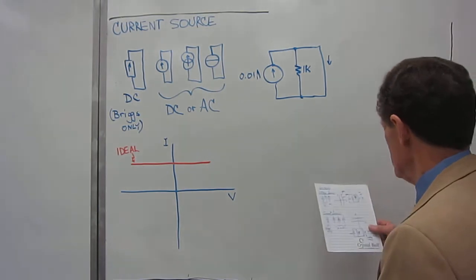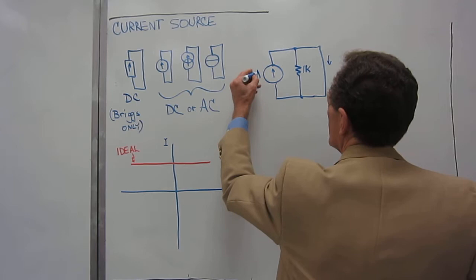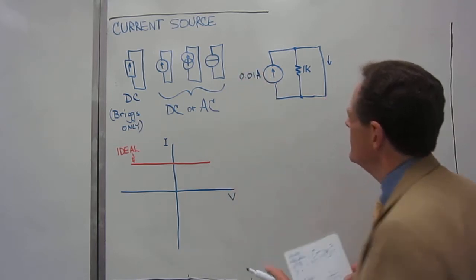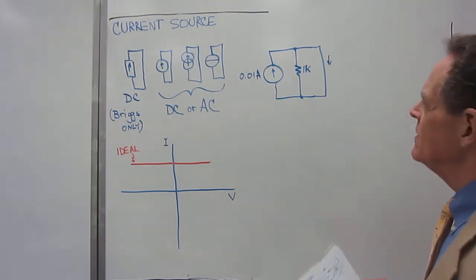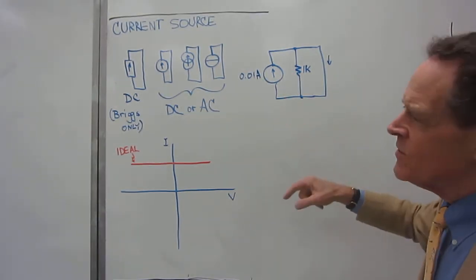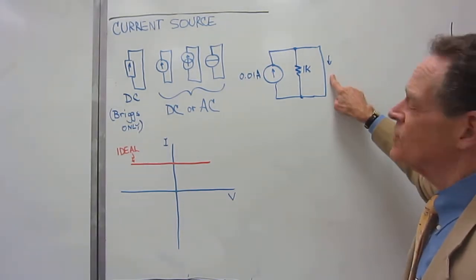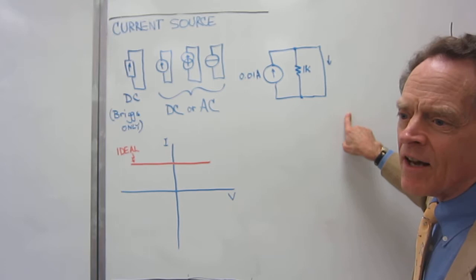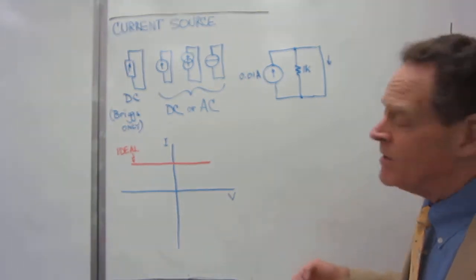But what happens if we, so in the voltage source, we started at infinity, open circuit, infinity ohms. We went down to 1K and then down to 10 ohms. So, we're starting at zero. I'm going to take it up to 10 ohms and then on up to 1K. And we'll see what happens.